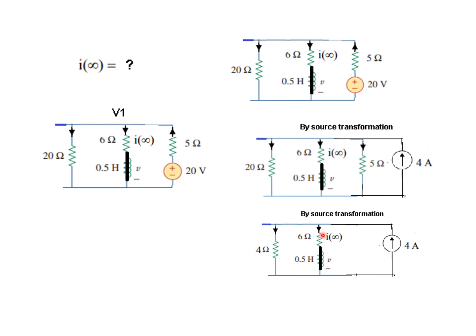From here you can see all three in parallel, so we'll combine these two so the circuit becomes easier. Combining 20 and 5 in parallel makes 4 ohms. Now we have two branches, so we can easily find the current in this branch. The formula is: total current, which is 4 amperes, divided by total resistance 6 and 4, multiplied by the opposite arm. So I infinity is 1.6 amperes.